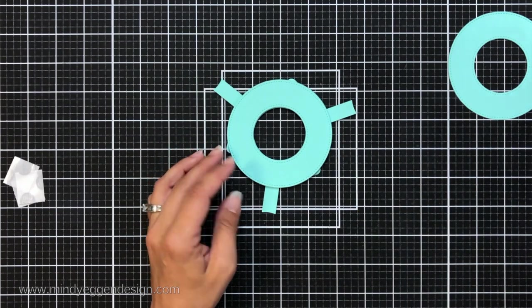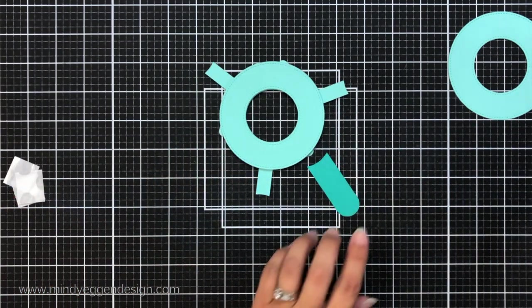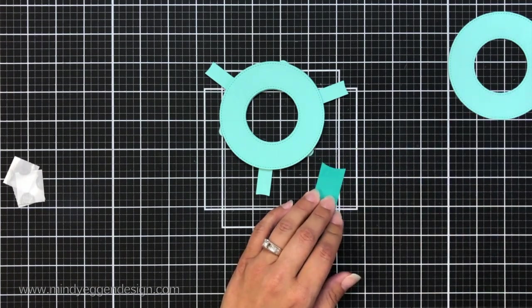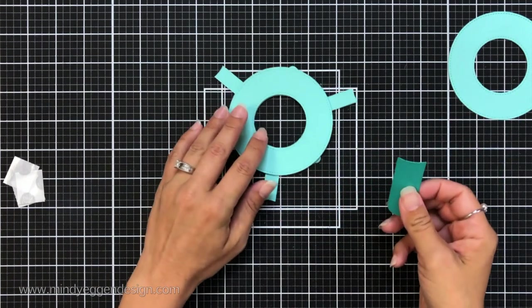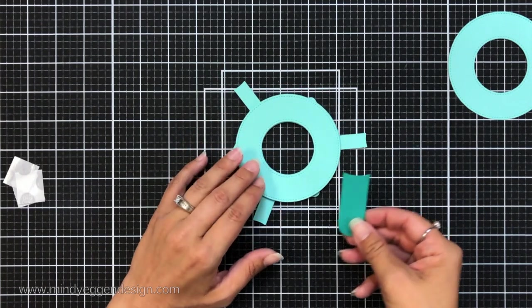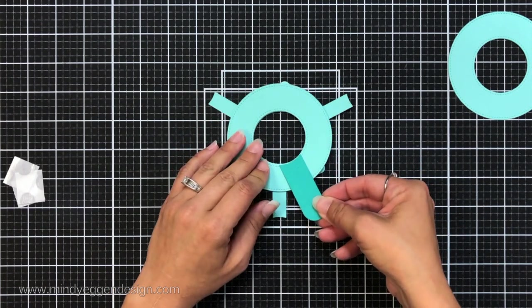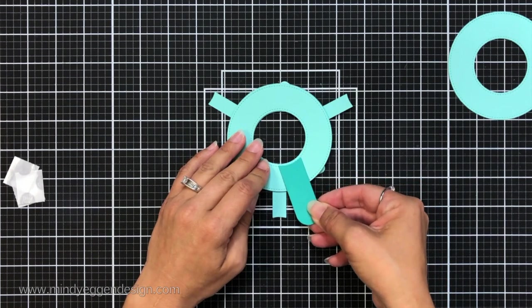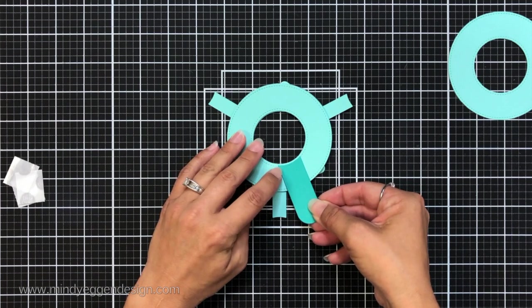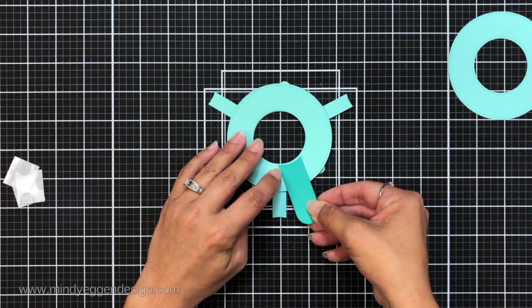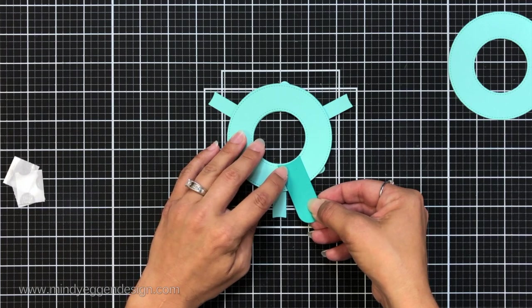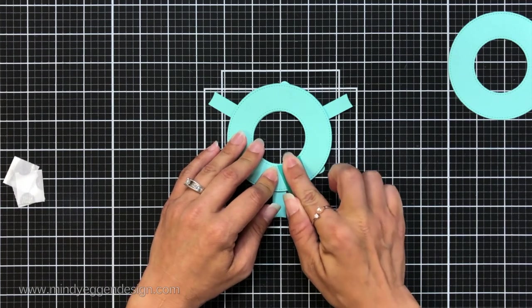Then I'll flip that back over and I'm going to attach my tab which is going to be the pull tab that they use to open and close our interactive portion. I just added a little bit of that tape runner and I'm going to line that curve up with the inside circle and you just need to go next to one of the tabs. So line that up and you're going to create kind of a little V there right between your pull tab and the smaller tab.